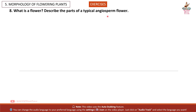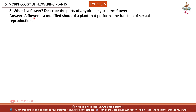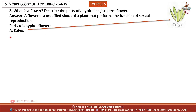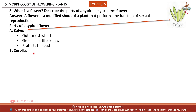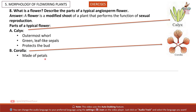Question 8: What is a flower? Describe the parts of a typical angiosperm flower. Answer: A flower is a modified shoot of a plant that performs the function of sexual reproduction. Parts of a typical flower: (a) Calyx — outermost whorl, green leaf-like sepals, protects the bud. (b) Corolla — made of petals, usually coloured and scented, attracts pollinators.